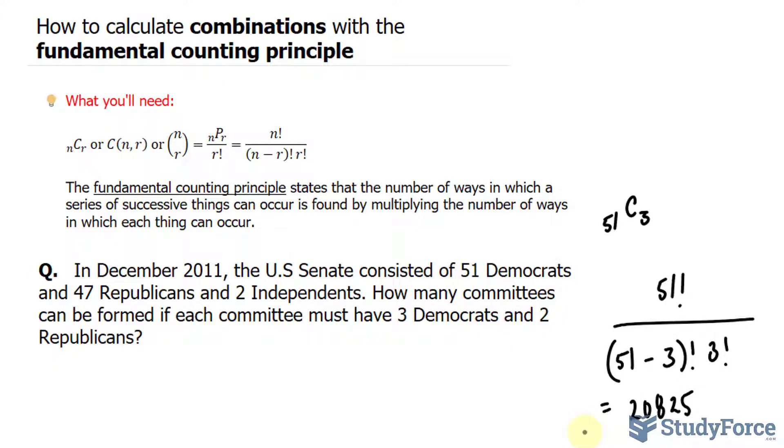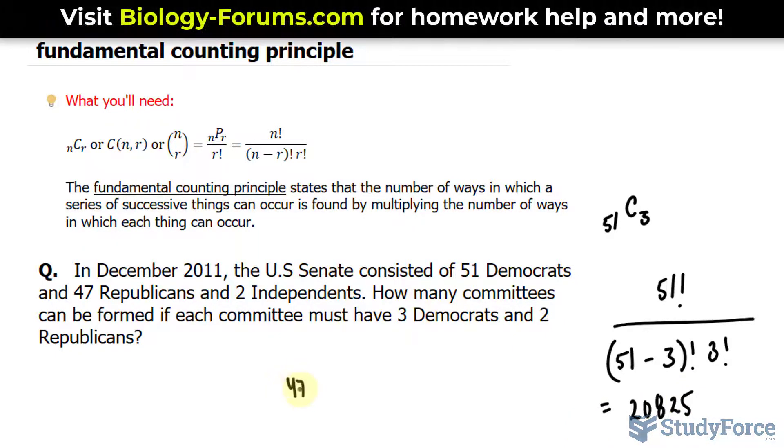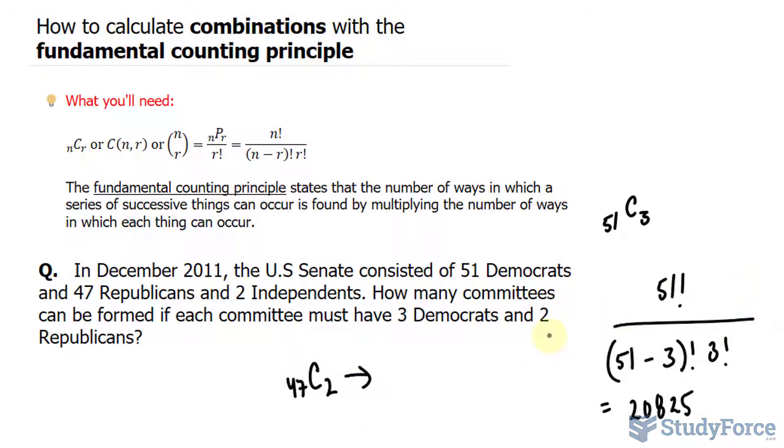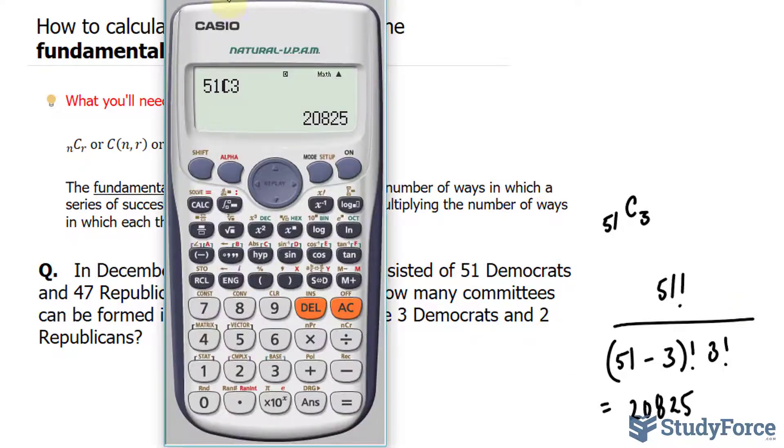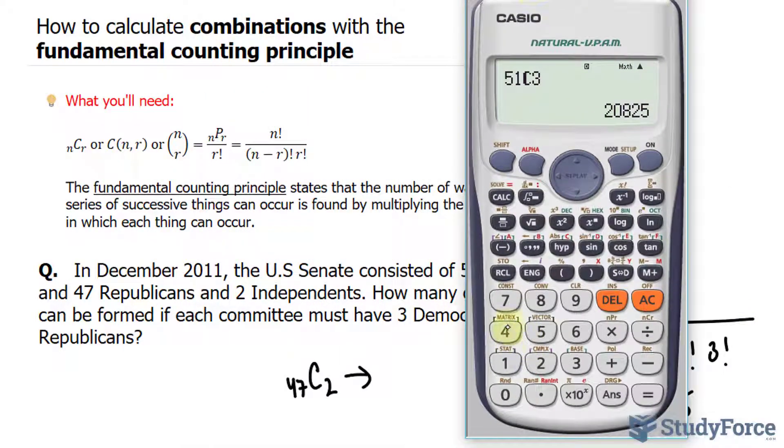Now from the Republican Party, this time we're selecting 2 from 47. So we'll write down 47 choose 2. And you can show your work except I'll just go ahead and use my calculator for this. 47 choose 2. We end up with 1,081 ways.